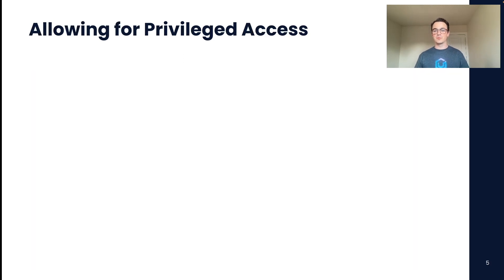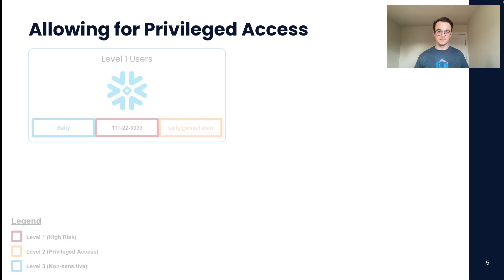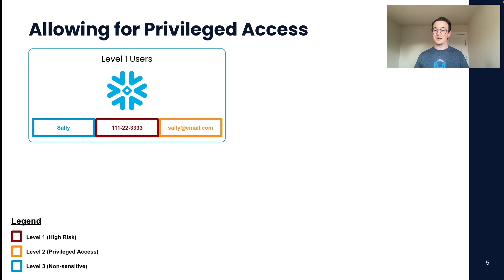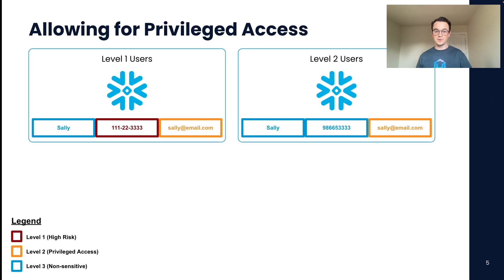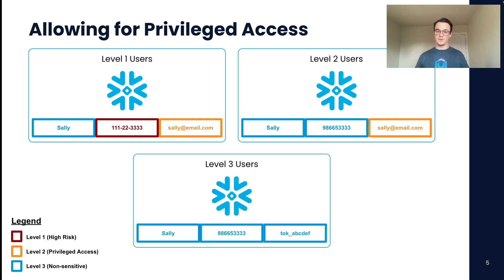Now, how do we allow for privileged access so that some users can get access to that original social security number, but other users can only get access to the tokenized format? Using the VGS native app, we can configure different levels. Here I have an example of what a level one user can see — they can see all the different fields in the raw: name, social security number, and email address. We can also configure level two users who can see the email column because they need to send emails, but they can't get access to the social security number. Finally, we have level three users who only see tokenized data and do not need to see the raw data in any circumstance.